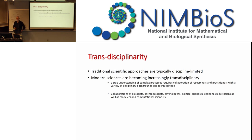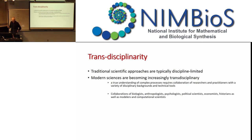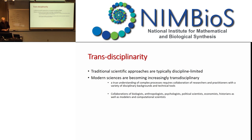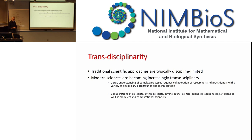The questions we are looking at are so complex that researchers from one particular discipline cannot really advance much. We need input from many different disciplines. As far as humans and human social behavior is concerned, it's biologists, anthropologists, psychologists, political scientists, economists, historians, philosophers — all these people, as well as modelers, the people who do mathematical models and use computational methods.